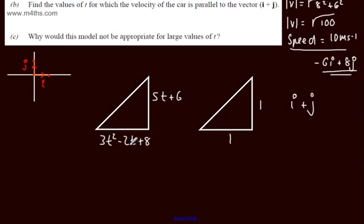We can say 3t squared minus 2t plus 8 over 5t plus 6 must be equal to 1 over 1. That is just one way you could look at it. Alternatively, if this is equal to 1, then this is equal to 1, you can set them equal.